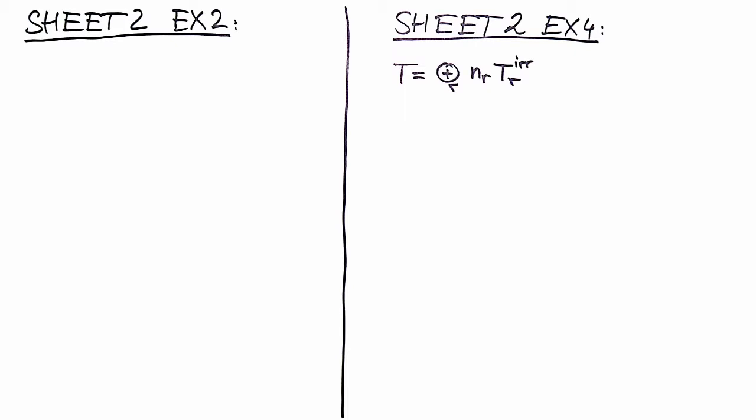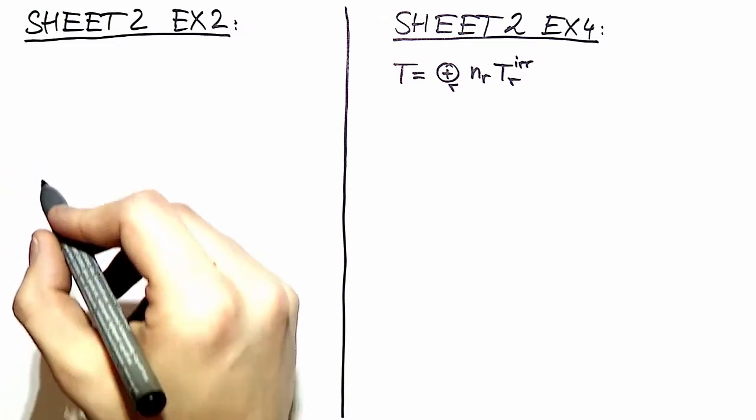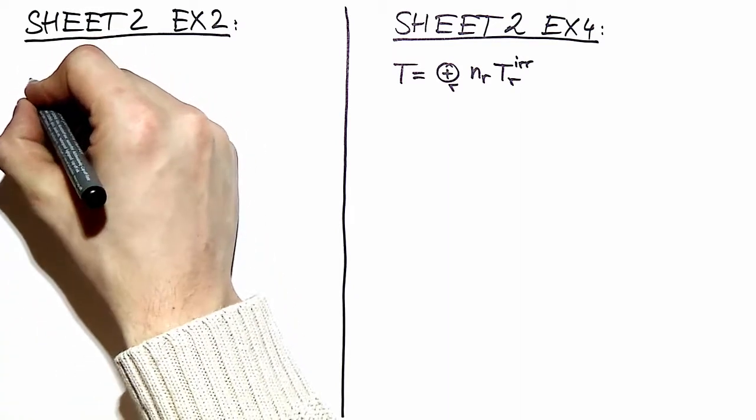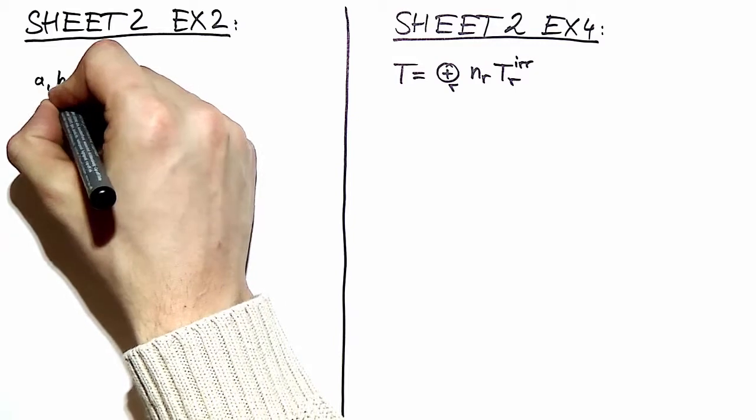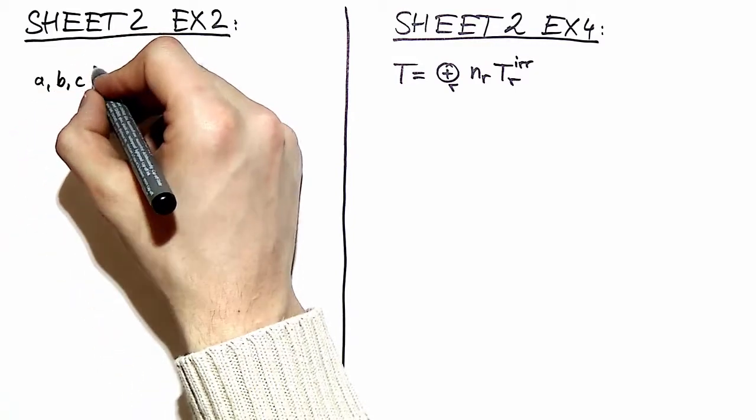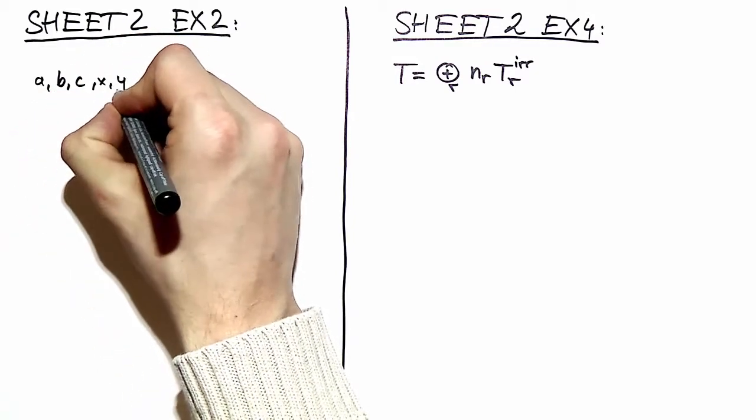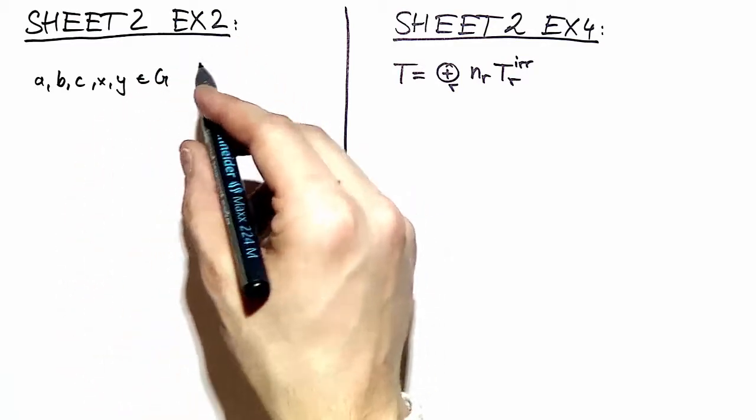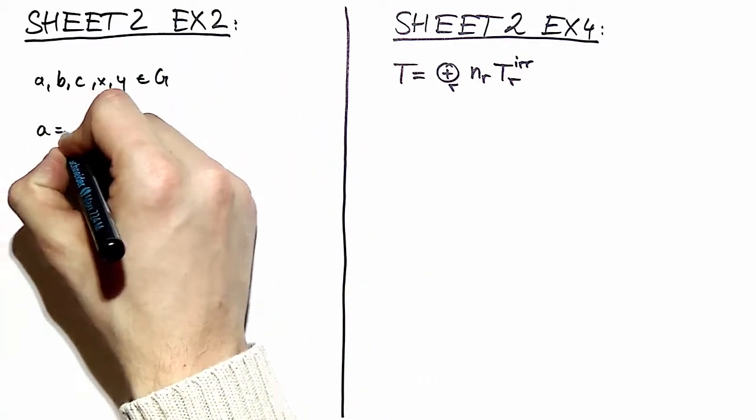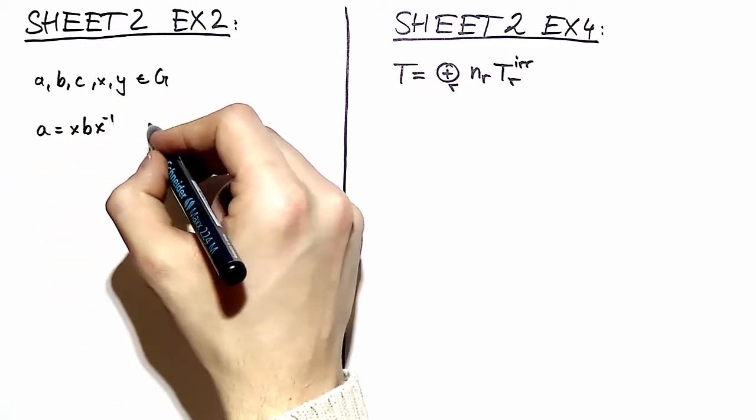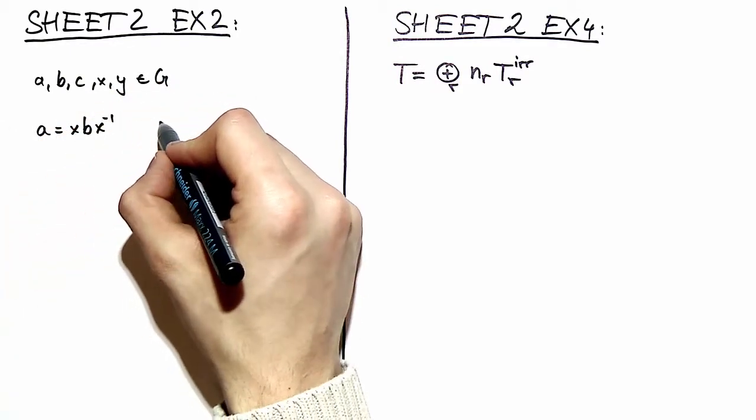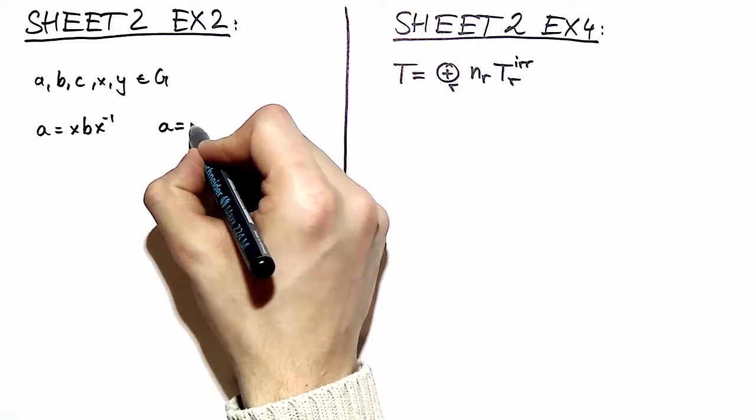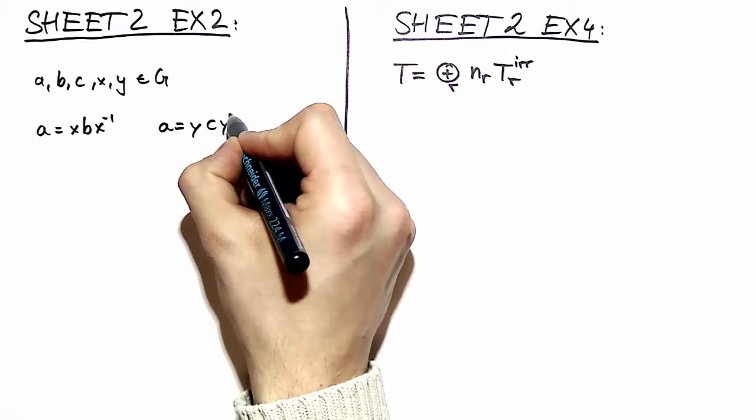Okay, you got it? We have that hint in our exercise sheet. We say a, b, and c are in the same conjugacy class, and we need two more elements x and y in our group G. A being conjugate to B means we have that similarity transform which transforms B into A, and the same is true for C of course.